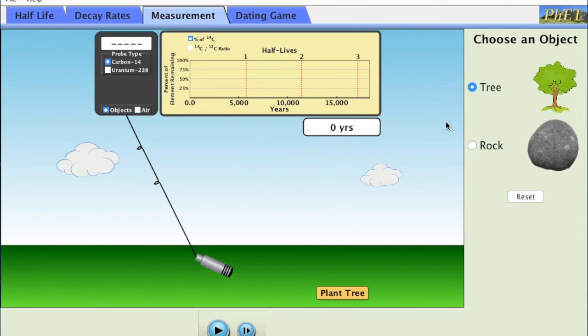Now in the measurement tab this is where we start to actually get into carbon dating and radioactivity for dating purposes. We have a tree and we have a rock that we can pick from. Now if we want a carbon date we need to pick a source that has carbon in it. So a tree is full of carbon.